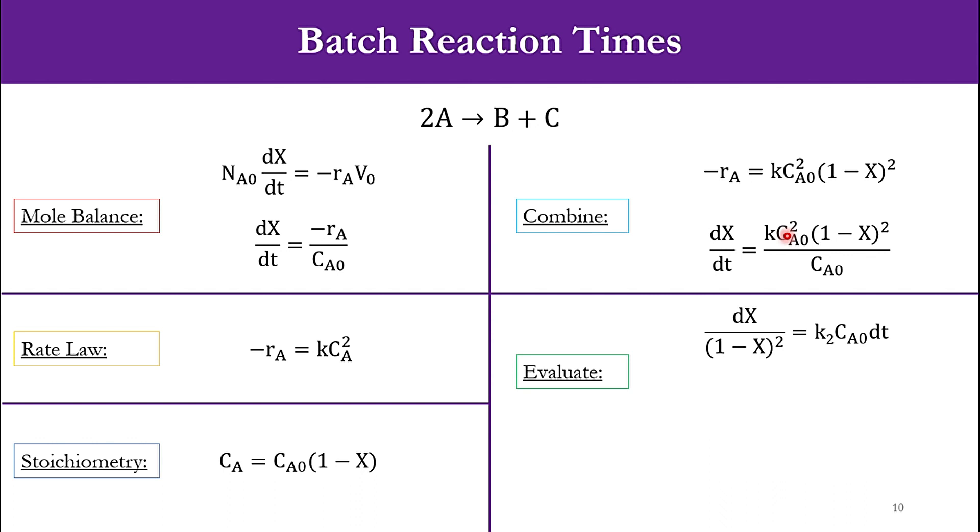Once we go to the evaluation part, it will be dX/(1-X)². dT will go to this side, so it will be k₂ - we've represented it as k₂ because it is a second order system. For first order we say k₁. So k₂CA0 dT. Then evaluating it by integration: k₂CA0 integral 0 to T dT equals integral 0 to X dX/(1-X)². Accordingly, TR (the reaction time) equals 1/(k₂CA0), and this will be solved as X/(1-X). This is the reaction time formula to calculate the batch reaction time for the second order system.